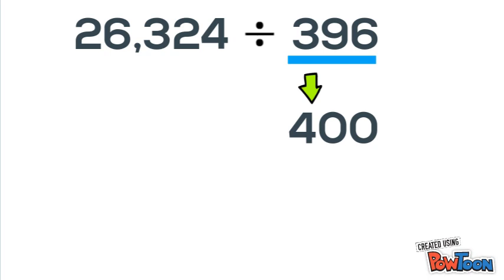So you should be thinking in your head, well, four times six is 24 and four times seven is 28, and our first two digits are 26.